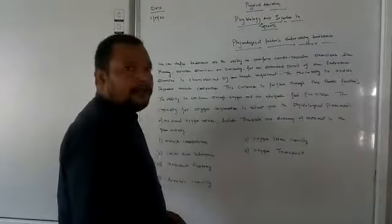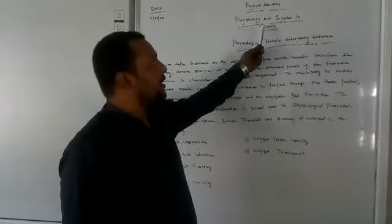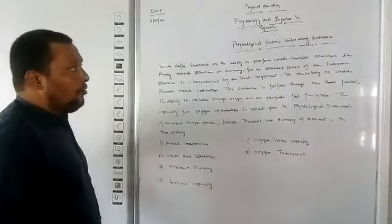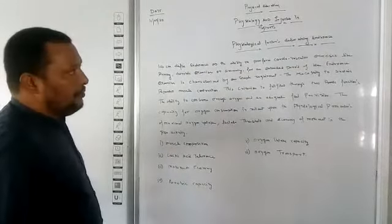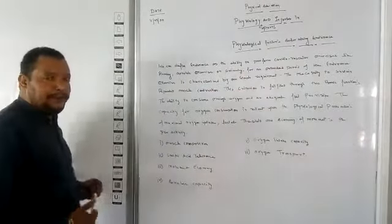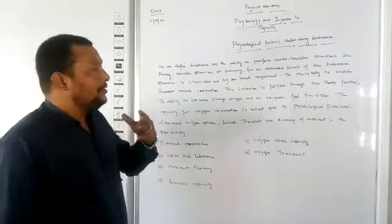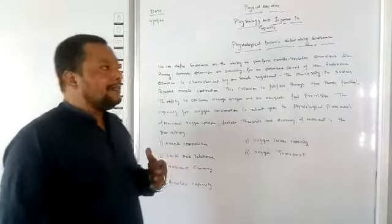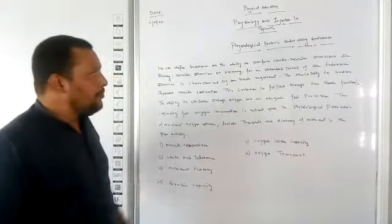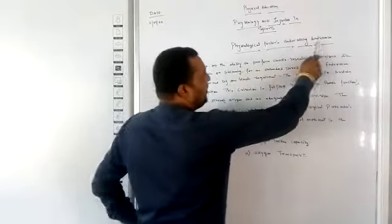Good afternoon class 12th and welcome to our today's virtual class. Today we are dealing with the series chapter that is Physiology and Injuries in Sports. Today we are having the next topic in the same chapter. The name of today's topic is Physiological Factors Determining Endurance. In the previous virtual class we completed two components of fitness related with physiological factors — number one is speed and second one is strength.